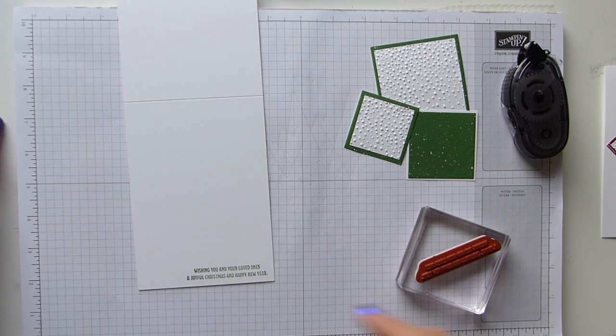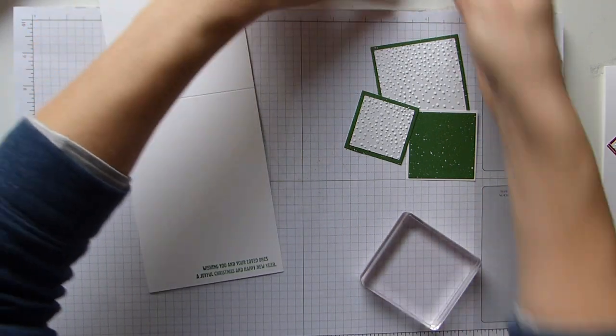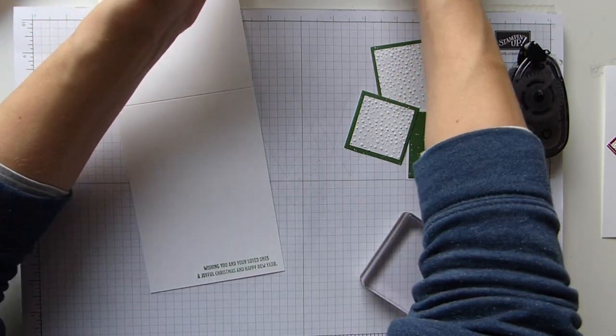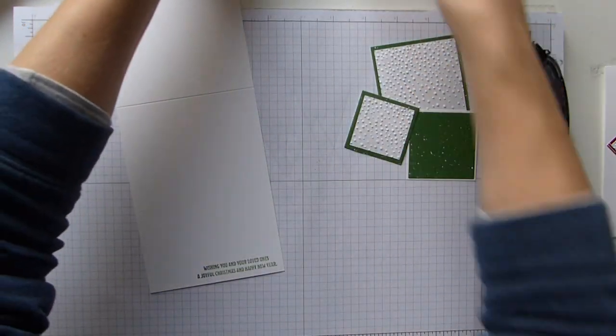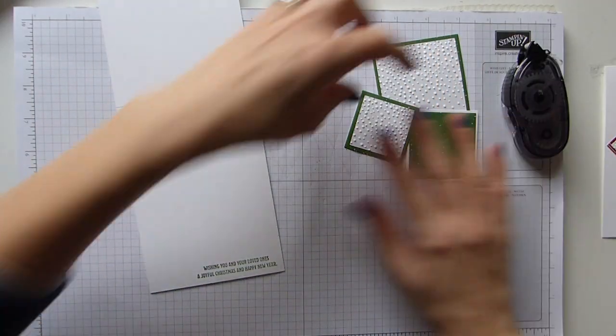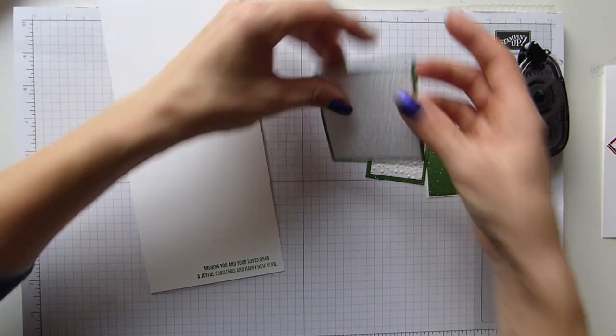I'm just going to line the bottom of my stamp up with the bottom of my card, which I'm happy with there. And I'm just going to put that away and I'm actually going to get the Christmas tree stamp out while I'm there because I'll need that in a moment.